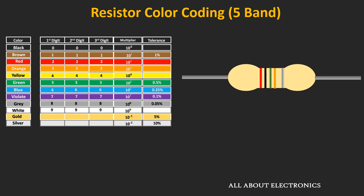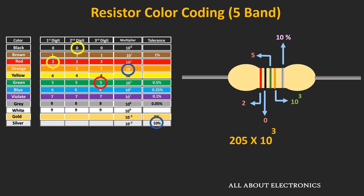Here is an example of a 5-band resistor. The first color band is red, defining the value of 2. The second band is black, defining 0. The third band is green, representing 5. The fourth band is orange, defining a multiplying factor of 10 to the power 3. The fifth band is silver, representing a tolerance of 10%. Combining all values, the resistor equals 205 × 10³, or 205 kΩ ± 10%.